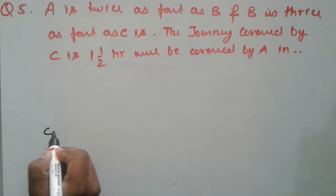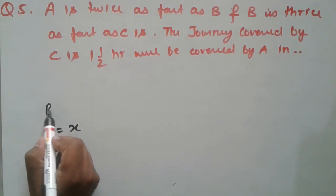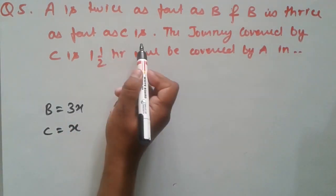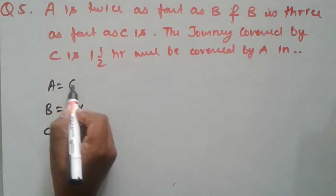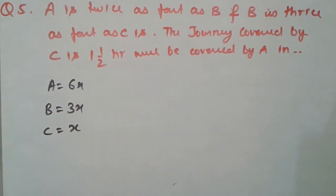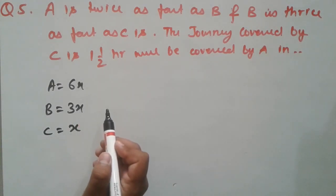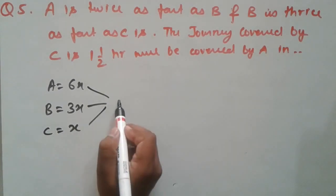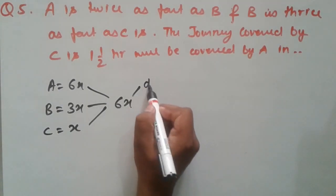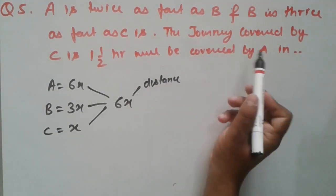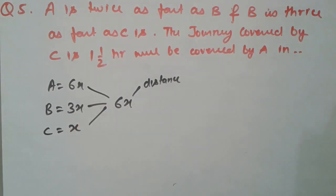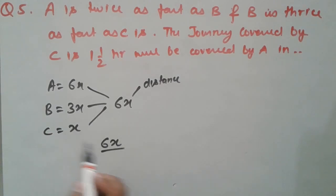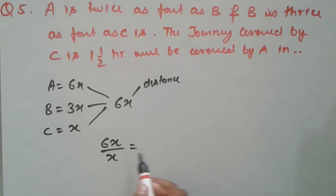Let C's speed be x. Then B's speed is 3x, because B is thrice as fast as C. And A's speed is 6x, because A is twice as fast as B. If we take LCM of 6x, 3x, and x, we get 6x, and we assume this as the total distance. In the question, total time taken by C is 1.5 hours. Distance divided by speed equals time: 6x / x = 6 units, which equals 3/2 hours.